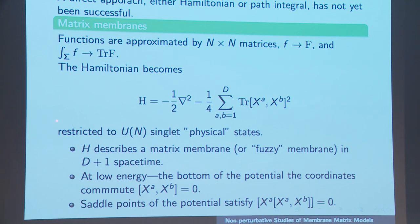However, that's not the case in the supersymmetric version, which I'll come back to. We have replaced the diffeomorphism invariance by a U(N) symmetry, and the Gauss law constraint says that we should choose U(N) singlets for the physical states. This is the bosonic system — h is a matrix membrane or fuzzy membrane in d+1 dimensions. At low energies these flat directions and all the saddle points are given by the minimal surface equations.